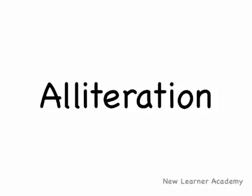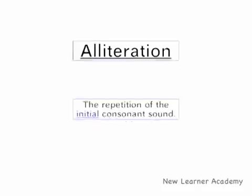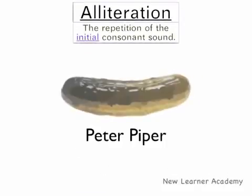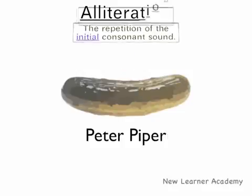Alliteration. Alliteration is the repetition of the initial consonant sound, like Peter, Piper, Pickled, Peppers. They all start with the letter P and make the P sound.